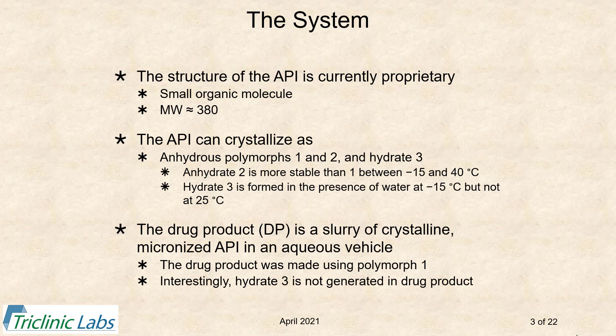Competitive slurry experiments showed that anhydrate two is more stable than anhydrate one between minus 15 and 40 degrees C. Interestingly, hydrate three is formed in the presence of water only at low temperature—found at minus 15 degrees C but not at 25 degrees C. When the drug product is made, polymorph one was used initially, suspended in the aqueous vehicle. Because temperatures were not sufficiently low, hydrate three is not generated in the drug product.